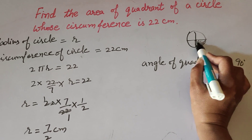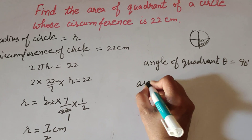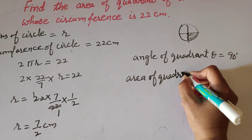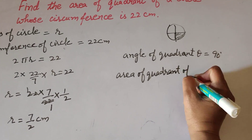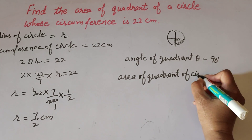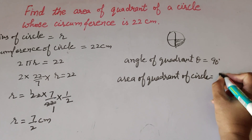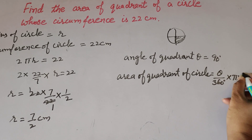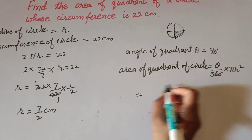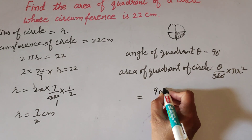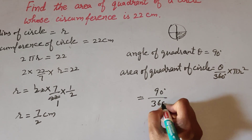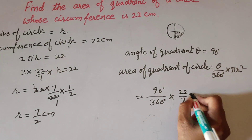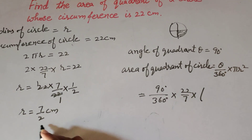Now we find the area of one quadrant. We know the formula to find the area of a quadrant of a circle: it is equal to the area of a sector, which is theta/360 degrees multiplied by πr². So theta equals 90 degrees over 360 degrees, multiplied by π (value 22/7), multiplied by r squared, where r is 7/2.